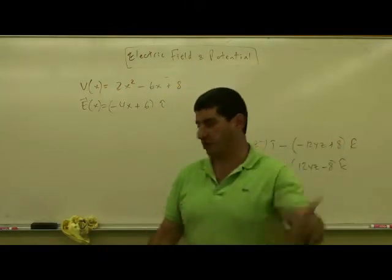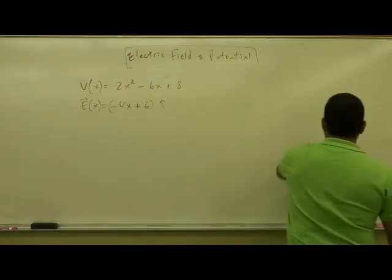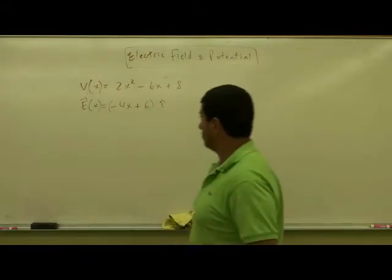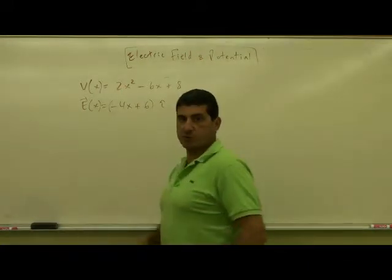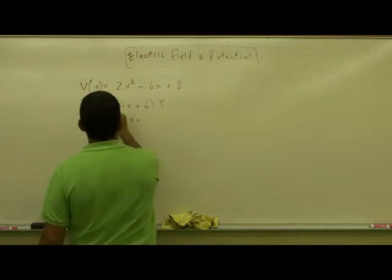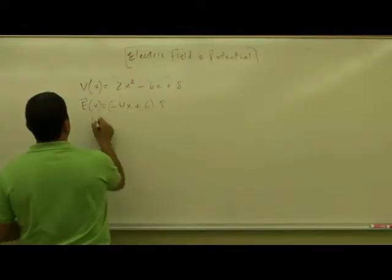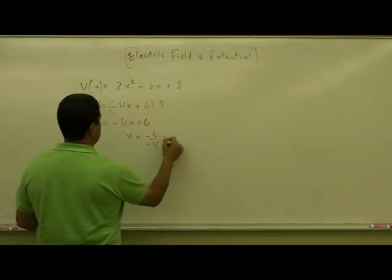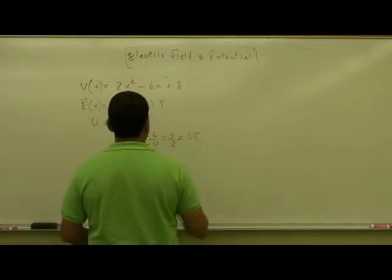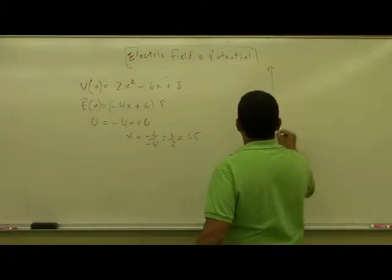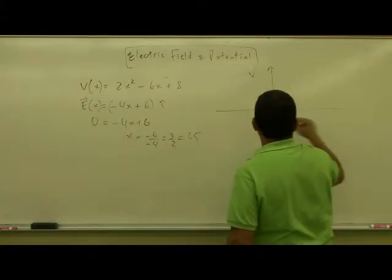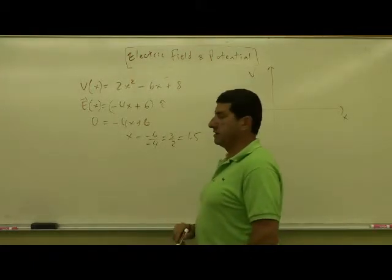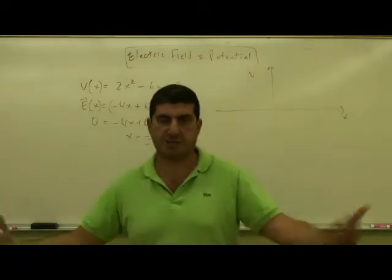We can develop this further and visualize it, similar to what we did in physics 1 with forces. If we set the electric field equal to zero, we get x = −6 / −4 = 3/2 = 1.5. So if we draw a graph of voltage versus x, at x = 1.5 the electric field is zero, meaning any particle placed there experiences no force.